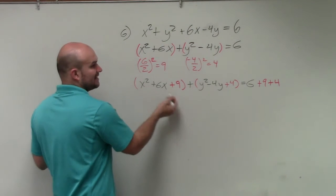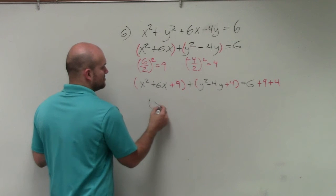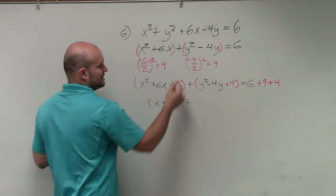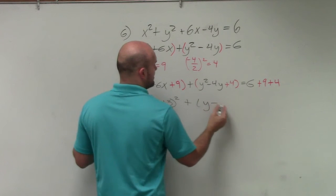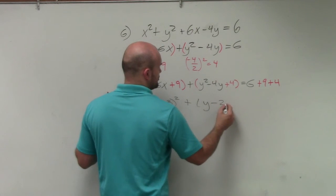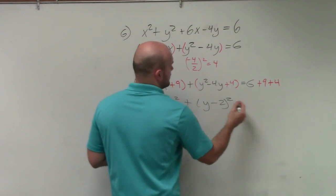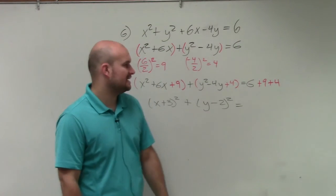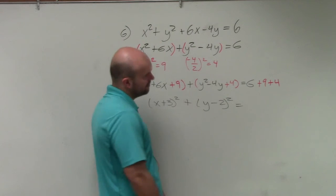So now in this case, I can complete the square here. This becomes x plus 3 squared plus here, this becomes y minus 2 squared. And then therefore, this becomes 13, 19.